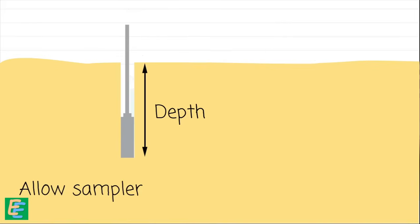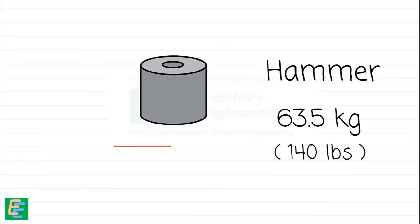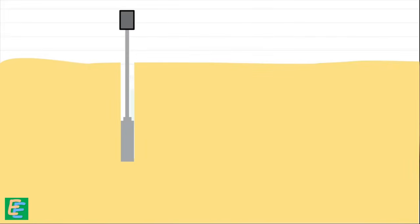Once the sampler is lowered to the bottom of the borehole, we note down the depth. At first, we allow the split spoon sampler to sink under its own weight into the soil. Next, a hammer of weight 63.5 kg is raised to a height of 75 cm and allowed to fall freely onto the rods connected to the sampler, driving it deeper into the soil.